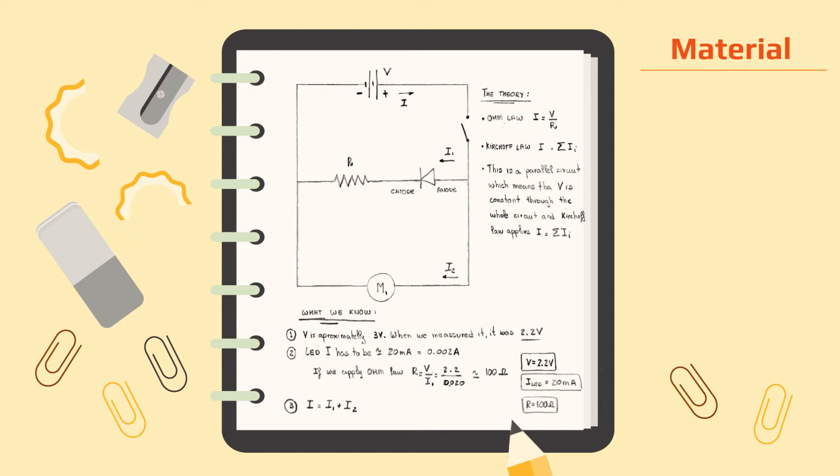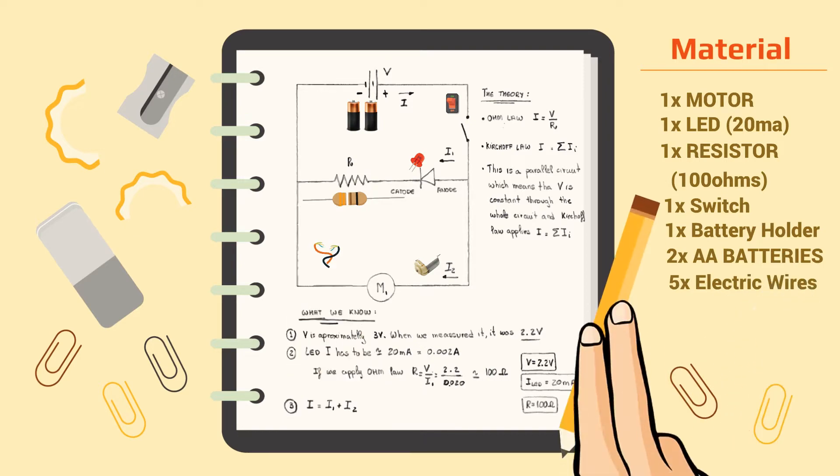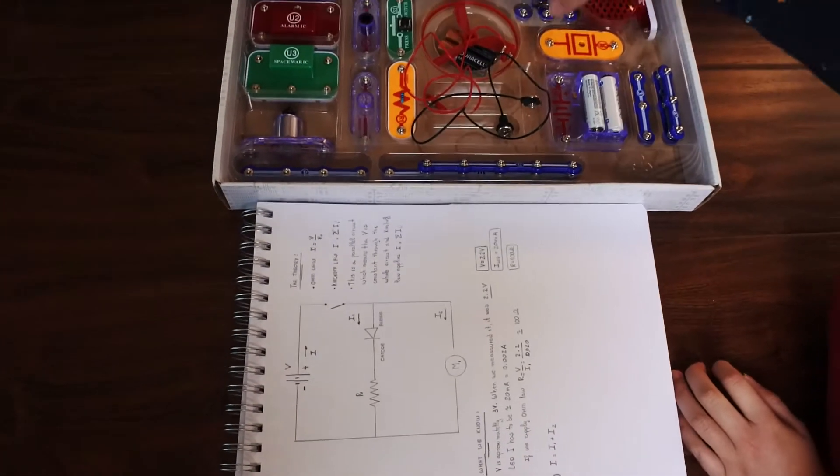We will need a motor, an LED, 100 ohms resistor, a switch, a battery holder, a couple of batteries, and a few wires. We will also use a snap circuits board.